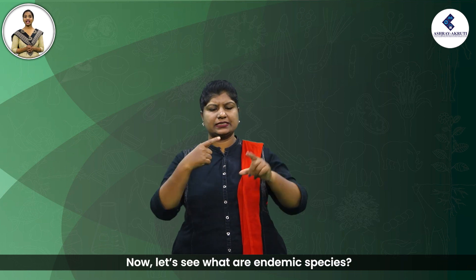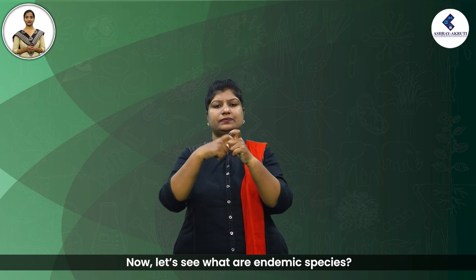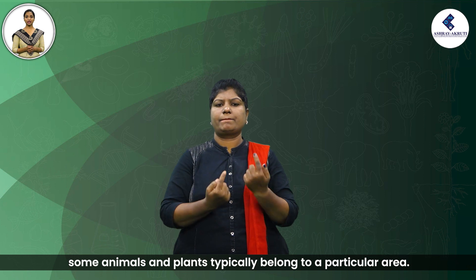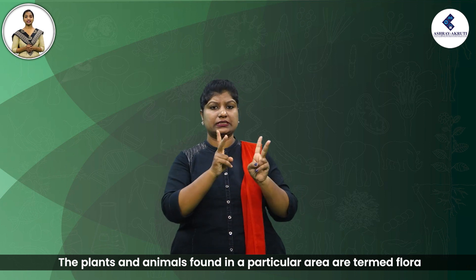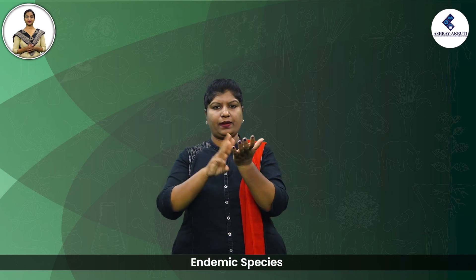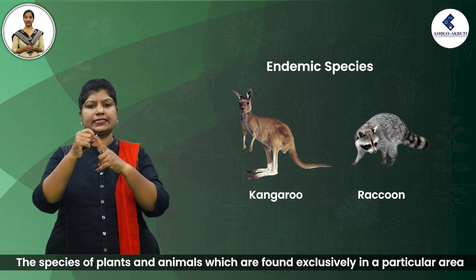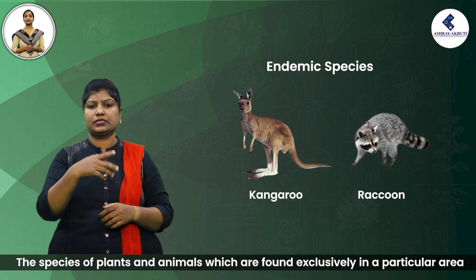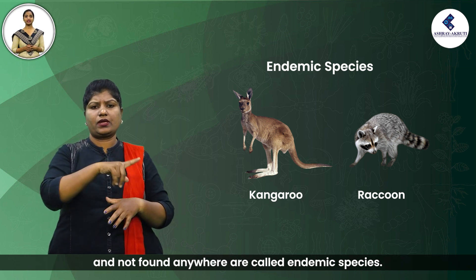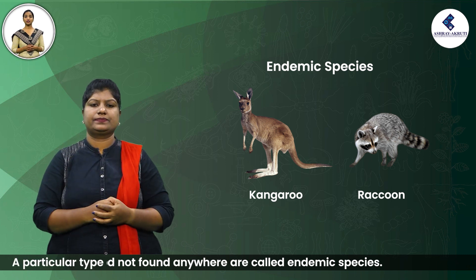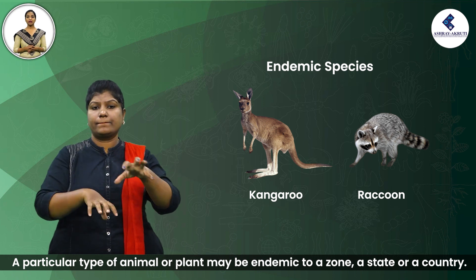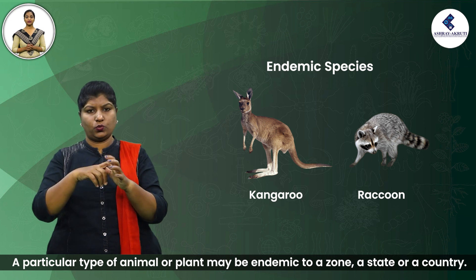Now let's see what endemic species are. Some animals and plants typically belong to a particular area. The species of plants and animals which are found exclusively in a particular area and not found anywhere else are called endemic species. A particular type of animal or plant may be endemic to a zone, a state, or a country.